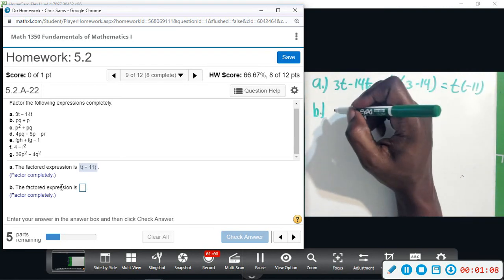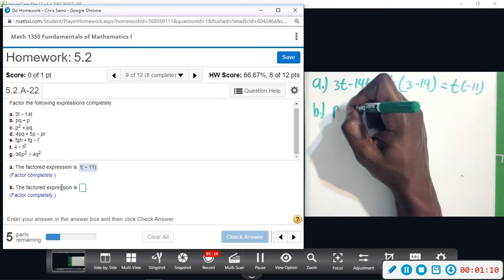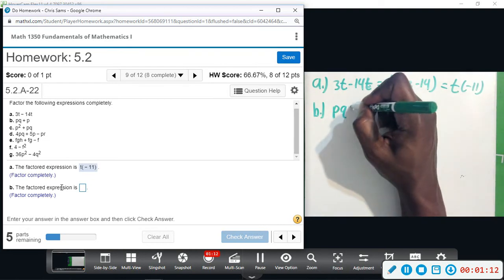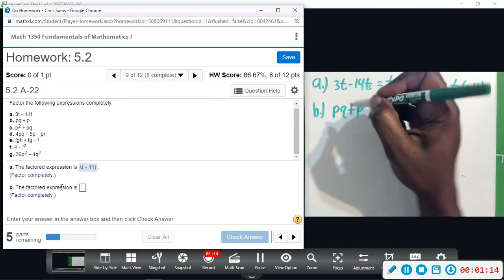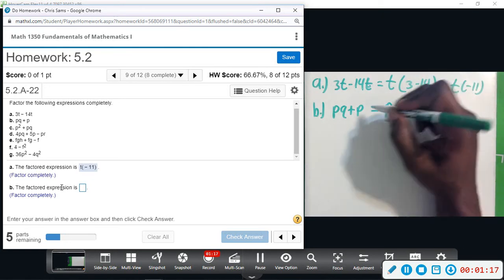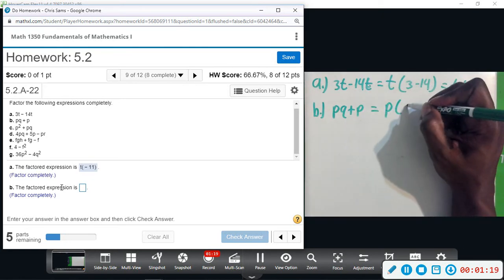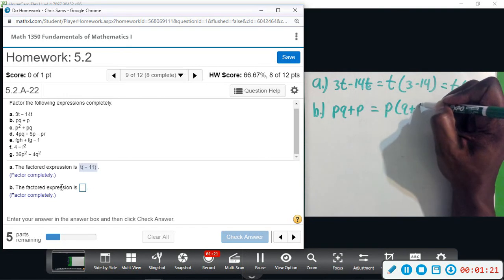Part b: pq plus p. So pull a p from both and we will have p outside in parentheses q plus one.